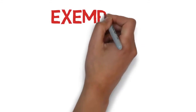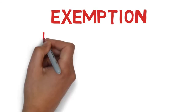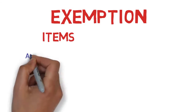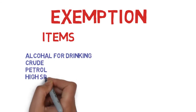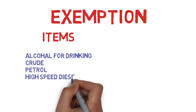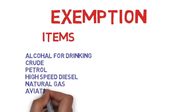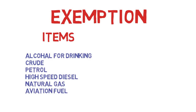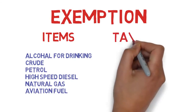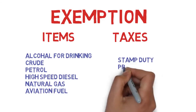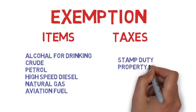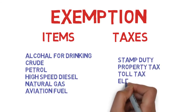Some items are exempted from GST: alcohol for human consumption, and petroleum products like crude oil, petrol, high-speed diesel, natural gas, and aviation turbine fuel. Some taxes are also exempted from GST, including stamp duty, property tax, toll tax, and electricity duty.